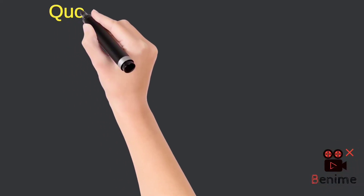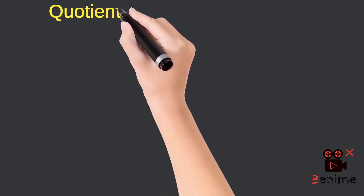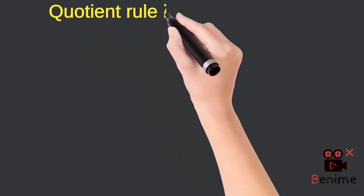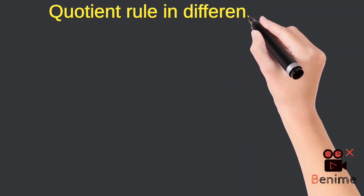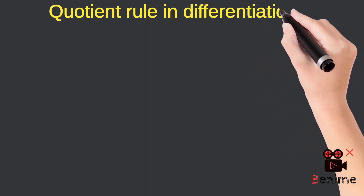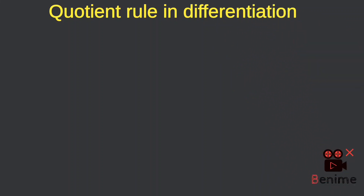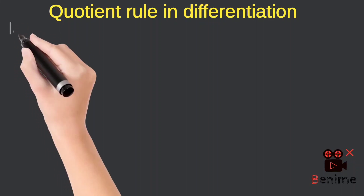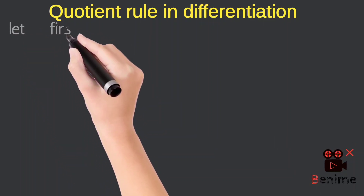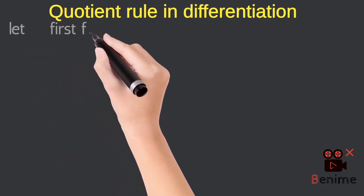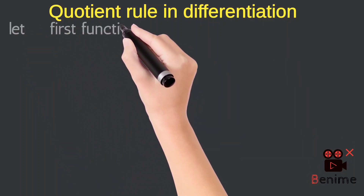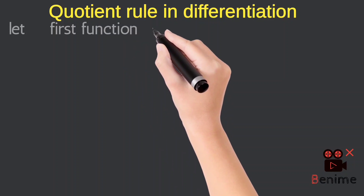Assalamu alaikum. My polite wish that everyone will be fine. Today's topic is related to the quotient rule in differentiation. Quotient means the division of two terms, two numbers, or two functions. In this lecture we will deal with quotient rule differentiation in general form.